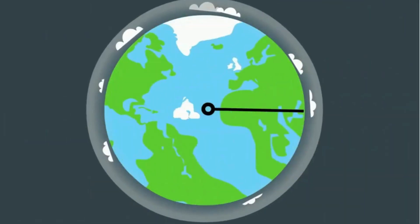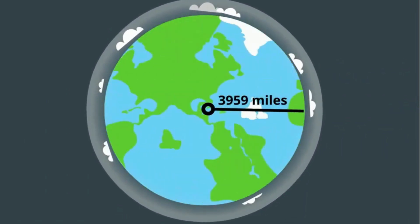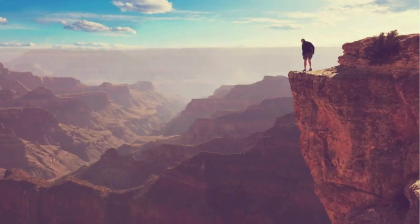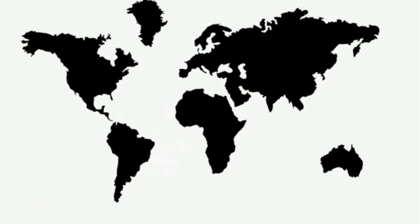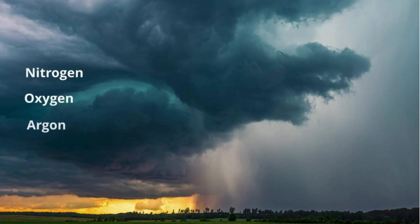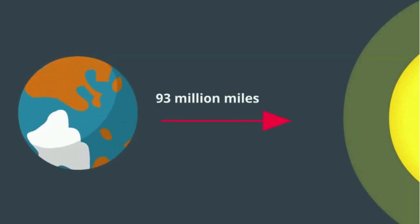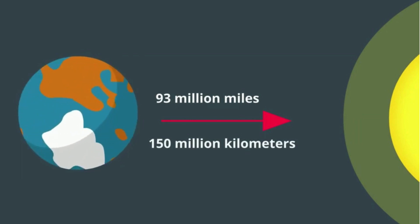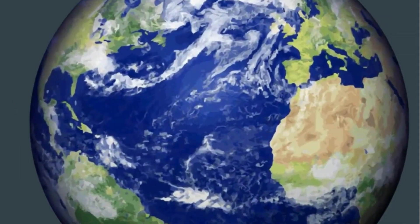Earth has a radius of roughly 3,959 miles. It has a solid surface composed of canyons, mountains, volcanoes, and tectonic plates that move. Its atmosphere is composed of 78% nitrogen, 21% oxygen, 1% argon, and less than 1% of other gases. Earth is 1 AU from the Sun, which is roughly 93 million miles or 150 million kilometers. The Earth has a huge variety of life on it.